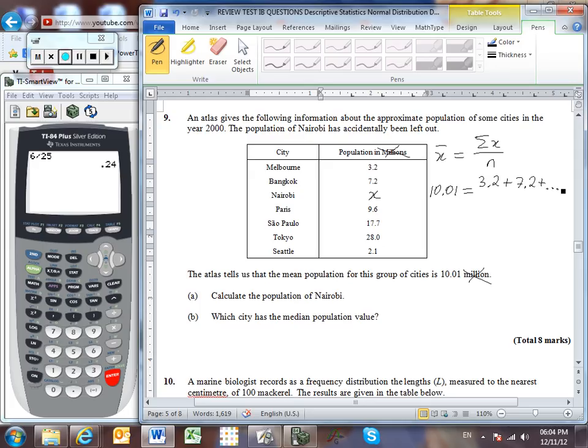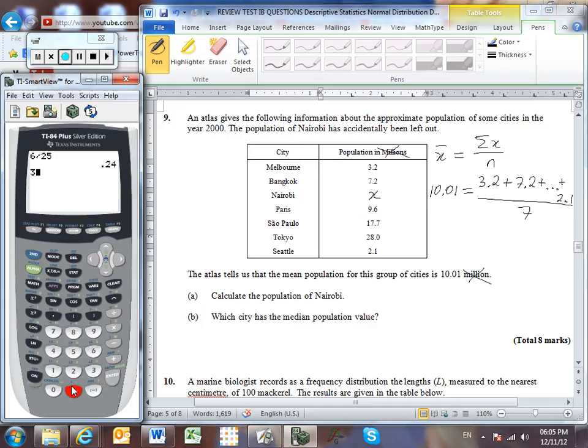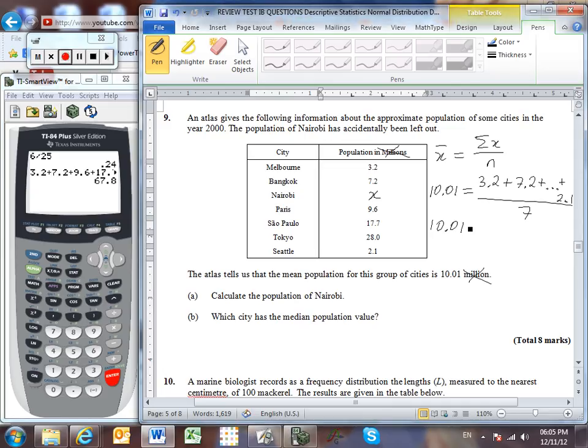So we know that the sum of all of these seven values divided by the number of values will be the mean. In our situation, our mean is 10.01. So if we add all of these values, we've got 3.2 plus 7.2 plus etc., all the way up to 2.1 at the end, divided by 7. Let me add these values over here. So I've got 3.2 plus 7.2, I'll leave the x until the end, plus 9.6, 17.7, 28, and 2.1. So that gives us so far a total of 67.8 plus our unknown value of x. That's the total sum of all seven of these cities. And divided by 7.